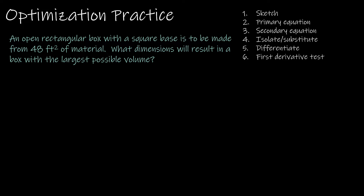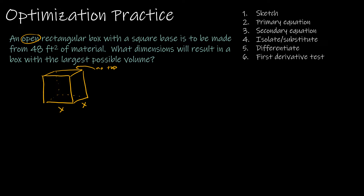Here's another question. Feel free to work ahead if you're feeling comfortable. We have an open rectangular box with a square base — essentially a three-dimensional box where the base is square, so those two dimensions must be the same, and it's open, meaning there's no top. I'll sketch that and label variables for the dimensions, including the height, since I'm solving for the dimensions and trying to maximize the largest possible volume.